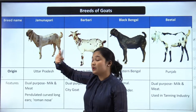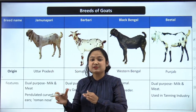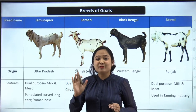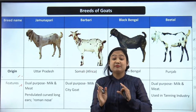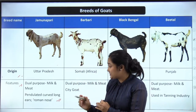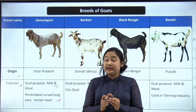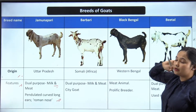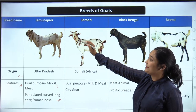Our strategy for studying goat and sheep breeds will be: first the breed name, then the origin, then the features — including any special properties or alternative names the breed is known by — and finally the purpose if clearly defined. We will start with indigenous goat breeds, meaning breeds whose origin is from the Indian subcontinent.